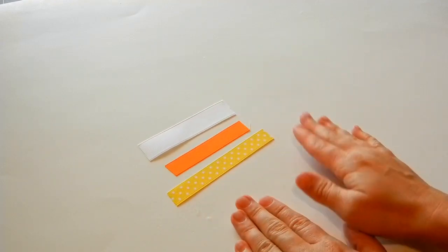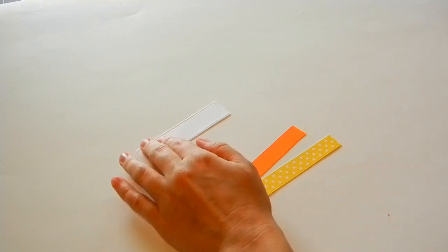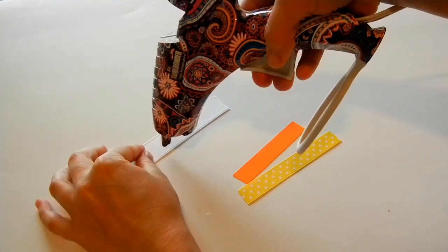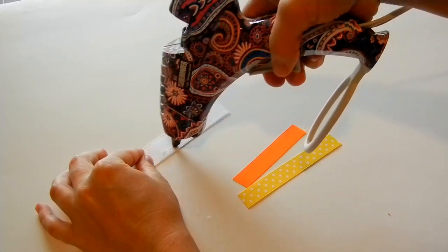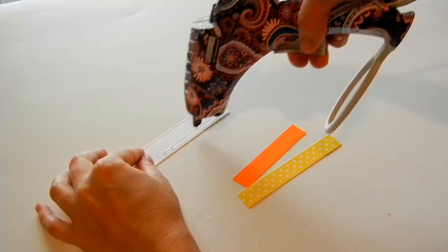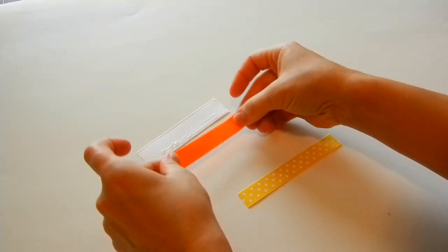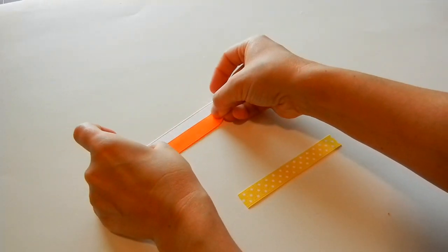So the first thing that we're going to do after we've got them cut, we're just going to glue them together. I'm going to take my hot glue gun and lightly place hot glue along the bottom. Take your orange and place it on top.